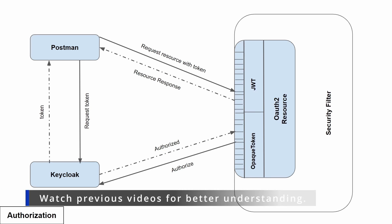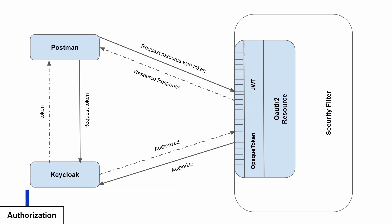In the last video we saw the authentication process and a demonstration using both JWT as well as the opaque token. In this video let's try to understand the authorization process.